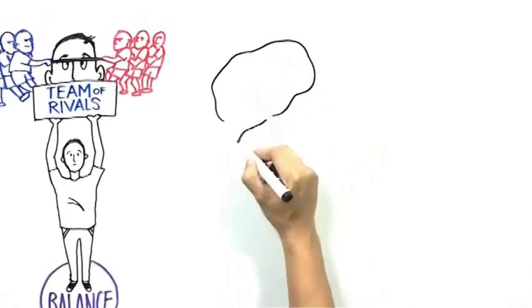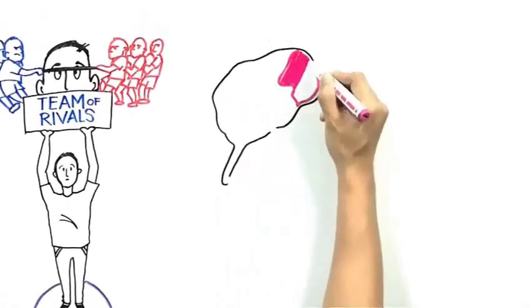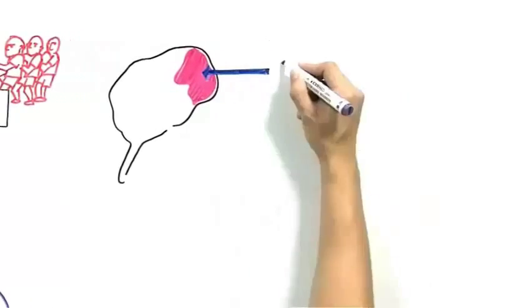To put this into perspective, there are essentially two parts of the brain, the prefrontal cortex and the limbic system.